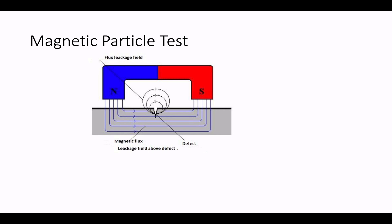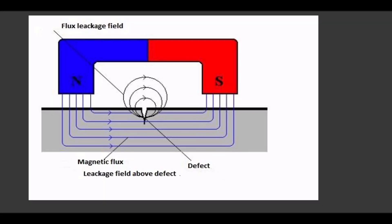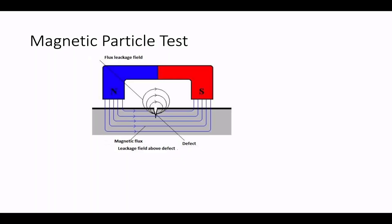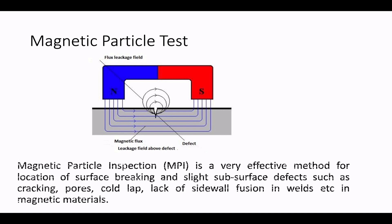Magnetic particle testing is a non-destructive inspection method that provides detection of linear flaws located at or near the surface of ferromagnetic materials. It is viewed primarily as a surface examination method. Magnetic particle inspection is a very effective method for locating surface-breaking and slight subsurface defects such as cracking, porosity, cold lap, and lack of side wall fusion in welds. This testing is limited to magnetic material; materials such as wood or plastic will not react with this device.